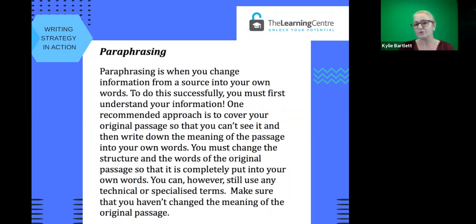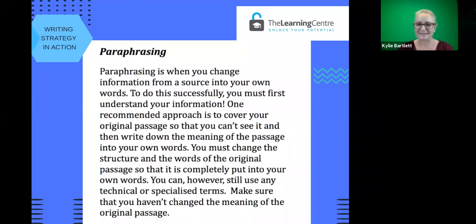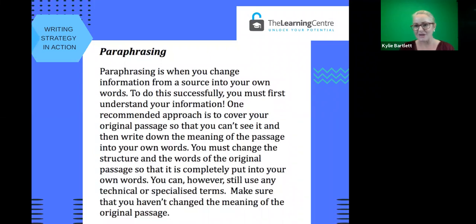Paraphrasing is basically when you take information from an original source and put it into your own words. In order to do this successfully, you first must understand what it is that you are reading. One recommended approach is that you cover the original passage so that you can't see it and write down the meaning of that passage in your own words. You must change the structure of the original passage so that it is completely put into your own words, but you will still need to acknowledge where you have taken that source from. Depending on your referencing system, you will need to follow the rules. Make sure that you haven't changed the meaning of the original passage in the paraphrased idea that you've put together.